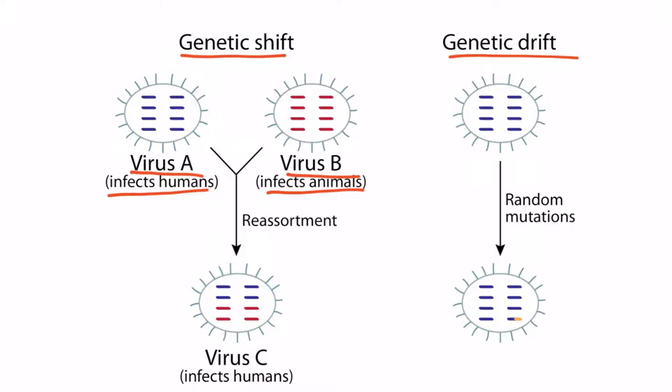If reassortment occurs, a new virus is produced — virus C — whose genome is drastically different and contains elements from both virus A and virus B. Because many elements from virus A were maintained, this novel virus still has the ability to infect humans. Genetic shift is a very dangerous process because the novel virus is so unique that it can evade the immune system and infect many people. This is why genetic shift is known to cause pandemics, which are widespread infections that may affect entire countries or even the entire world.